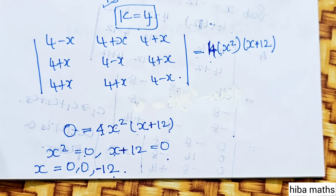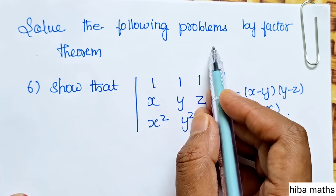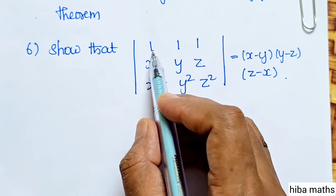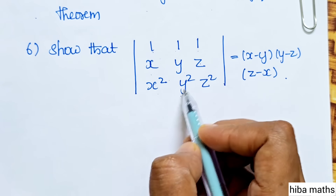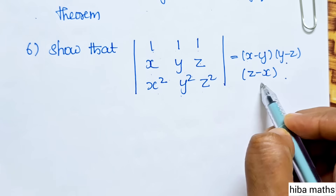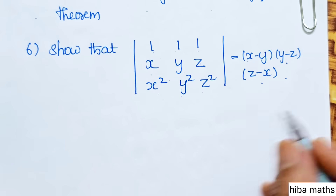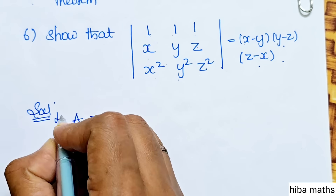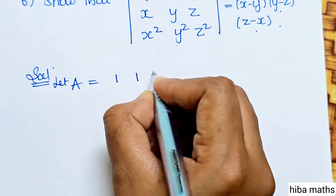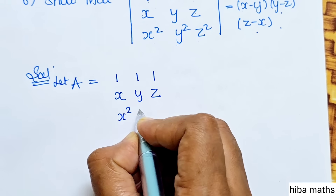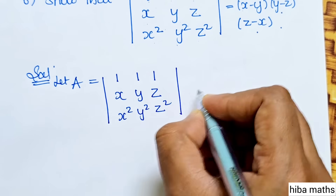Now for the second problem. Prove that the determinant equals x minus y, y minus z, and z minus x. Let A equal the matrix with entries: row 1 is 1, 1, 1; row 2 is x, y, z; row 3 is x squared, y squared, z squared. This is matrix number 1.